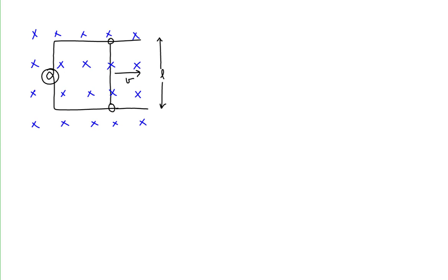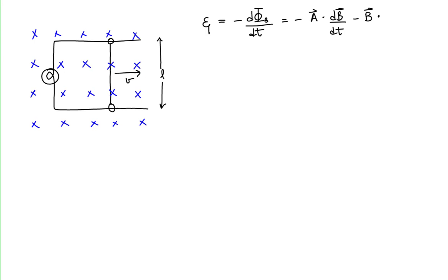Part A: find the induced EMF in the loop. Faraday's law says the induced EMF equals minus the time rate of change of magnetic flux, which equals minus the dot product of the area with dB/dt, minus the dot product of B with dA/dt. In this problem, the magnetic field is constant — it's not changing — so the time rate of change of the magnetic field is zero.